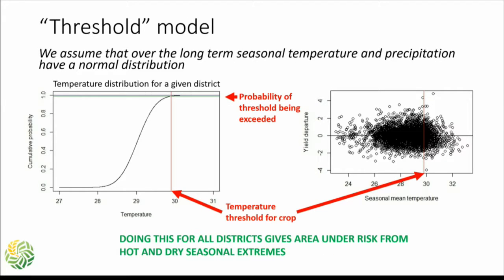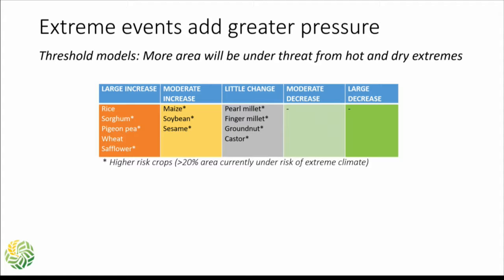She was then able to look at each district, identify the risk threshold for temperature and precipitation, and use that data to work through the impacts of climate change. Having done that, she found that more area will be under threat from extreme events. Most discussion focuses on gradual rise in temperatures or gradual fall in precipitation, whereas her work shows that extreme temperature and precipitation events would have a larger area-wide effect when you look district by district. That's an important finding — focusing attention on extreme events, not just long-term trends.